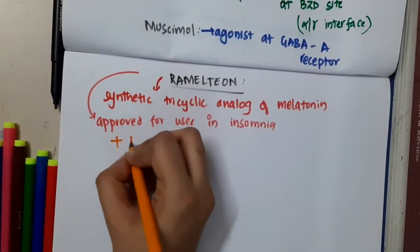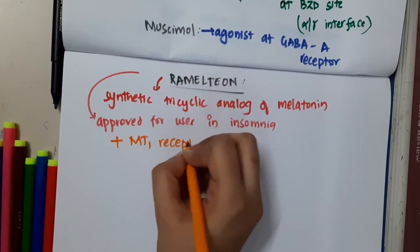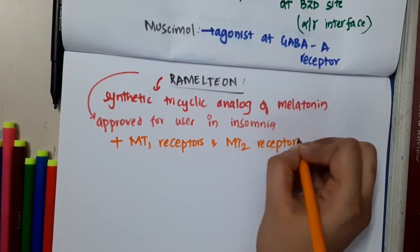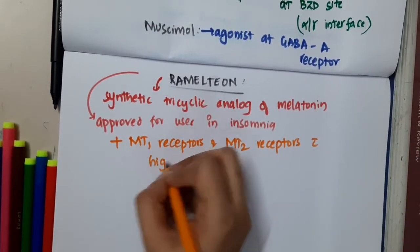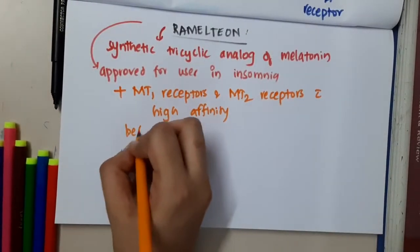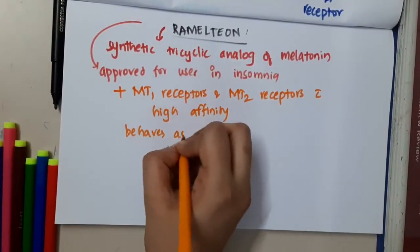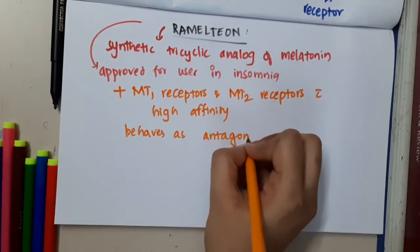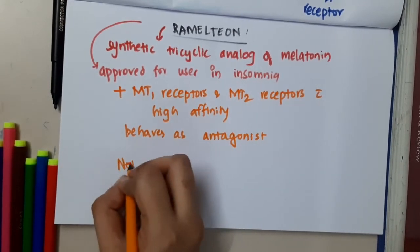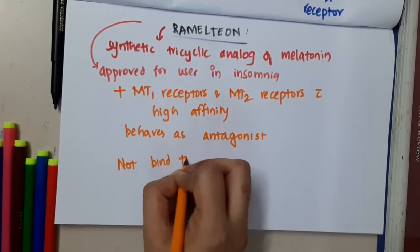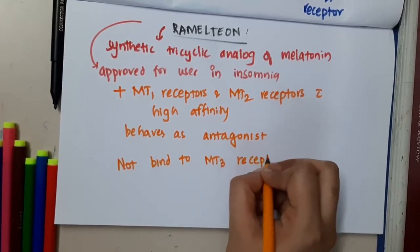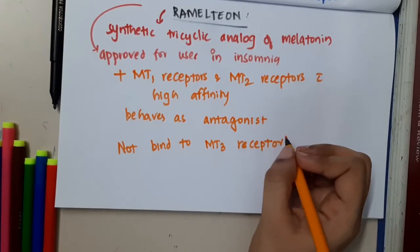Ramelteon binds to MT1 receptors and MT2 receptors with high affinity, and thus it behaves like an agonist. It does not bind to MT3 receptors.